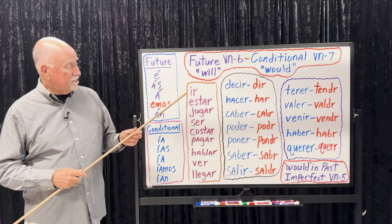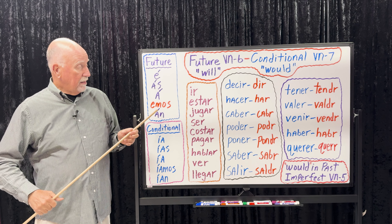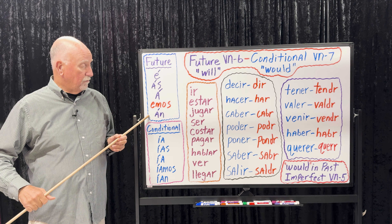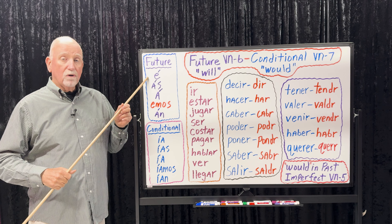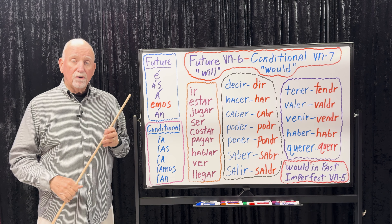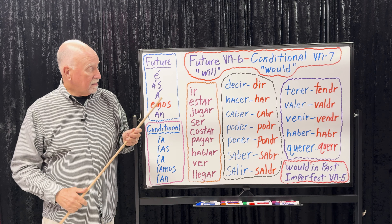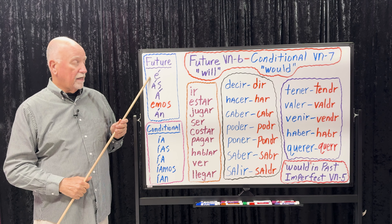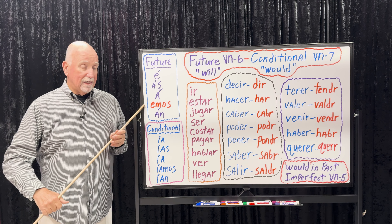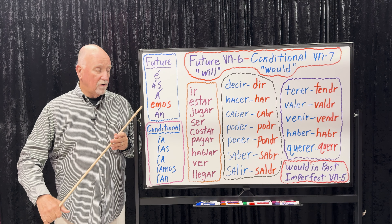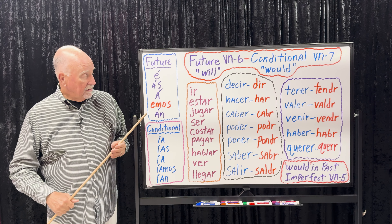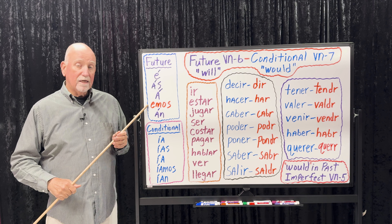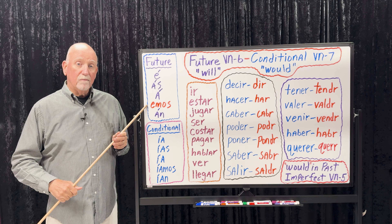Let's practice. 'We will go' — put the infinitive in front — iremos. 'They will go' — irán. 'I will go' — iré. 'Will you go?' — ¿irás? Let's take the verb estar. 'I will be there' — estaré allí. 'We will be at the party' — estaremos en la fiesta. Jugar: 'Will they play tomorrow?' — ¿jugarán mañana? 'We will play tonight' — jugaremos esta noche.